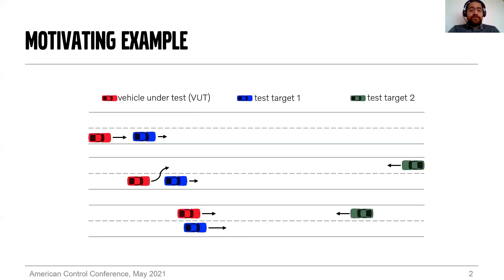First I would like to describe a motivating example, a traffic scenario. We are focusing on complex traffic scenarios that are not frequently found in public roads, or scenarios that are dangerous to test in public roads. In this figure we have a test scenario designed to validate an autonomous overtaking function of a certain vehicle under test, the vehicle in red.